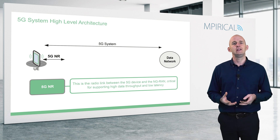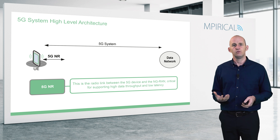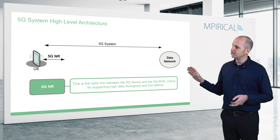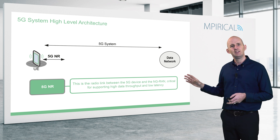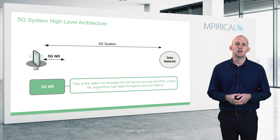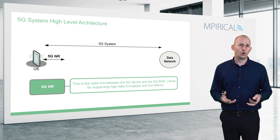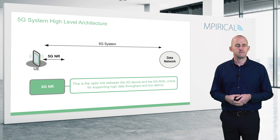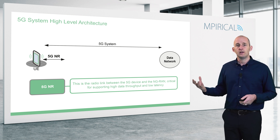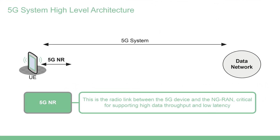The 5G system is made up of three main components. First, there is the radio link, termed New Radio, which sits between the device and the radio access network. It is absolutely critical for supporting high data throughput and, as appropriate, low latency. New Radio is different from all the radio technologies that have come before it.